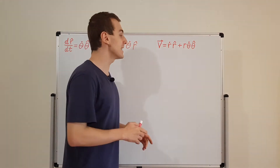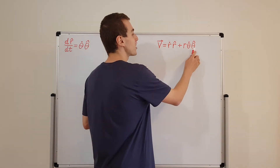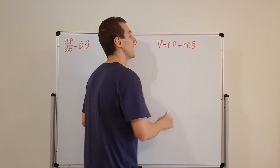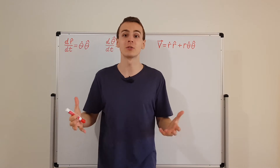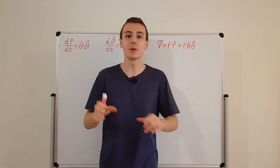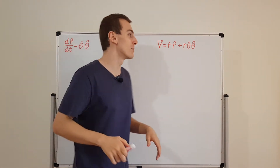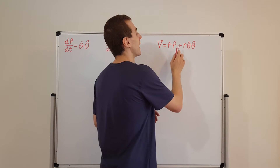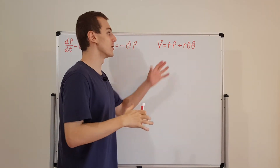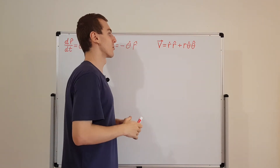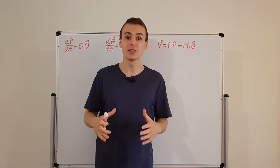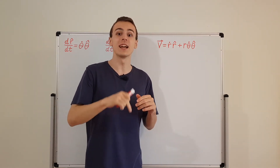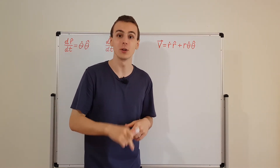Why is that the case? Well, it's because these unit vectors actually depend on the angle, and the angle in general could depend on time. So we have to add all these extra terms to make sure that the changes in those unit vectors are accounted for. If you haven't seen that previous video, make sure you watch it — you can find it in the link in the description below.